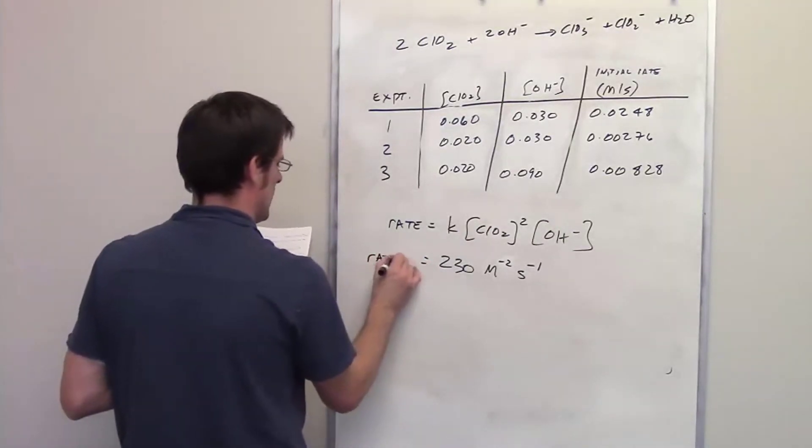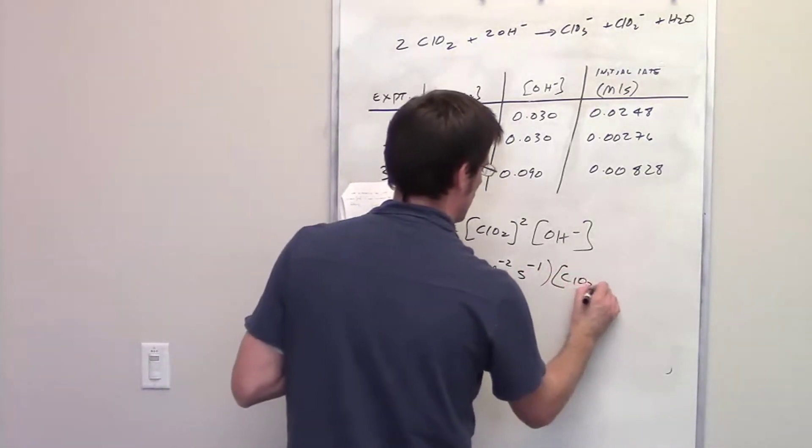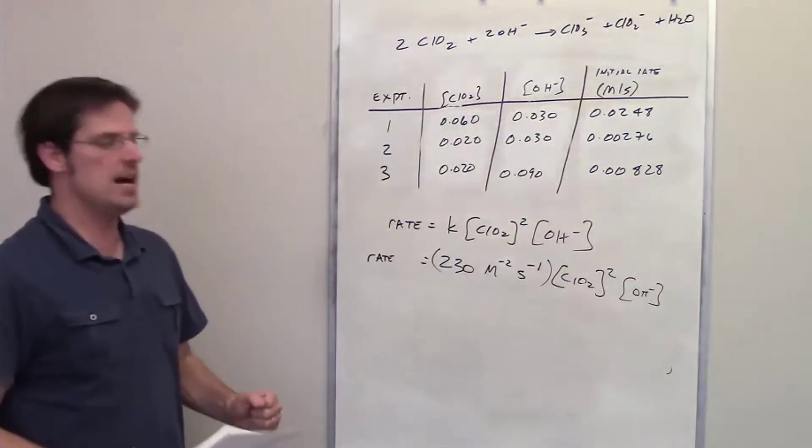So rate is going to be equal to this value of k multiplied once again by the concentration of chlorine dioxide squared multiplied by the concentration of hydroxide to the first power. Yeehaw!